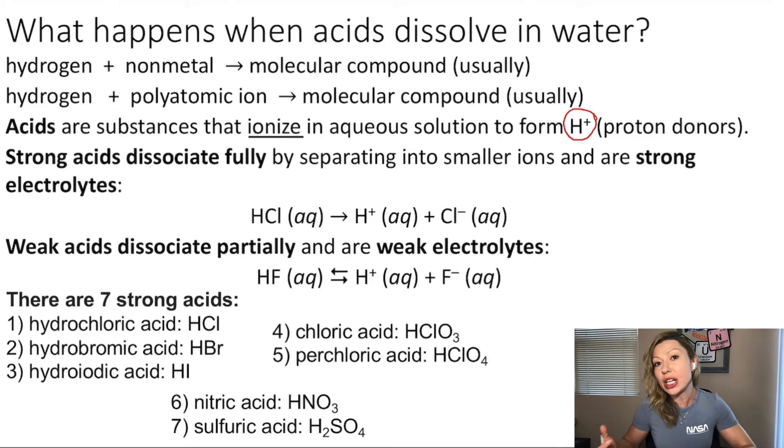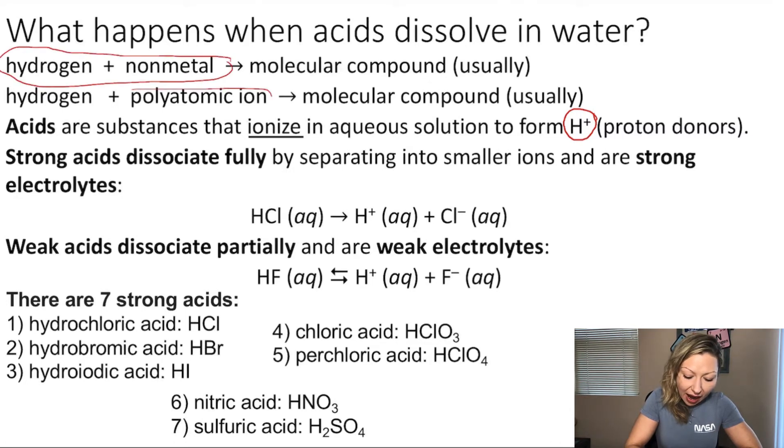There are different definitions of acids, but at this point, it's best if you remember that acids are molecular compounds. They are formed from hydrogen and a non-metal and hydrogen and a polyatomic ion, and then when they dissolve in water, they form H plus ions.